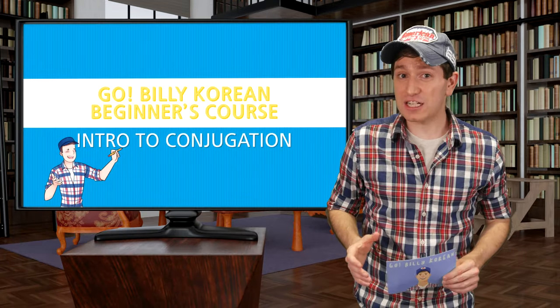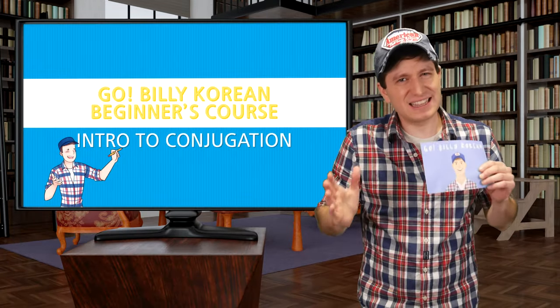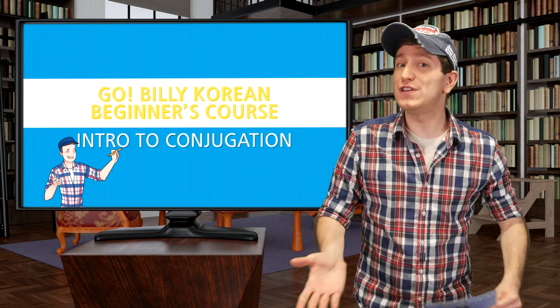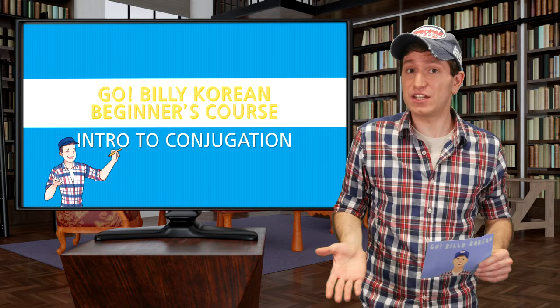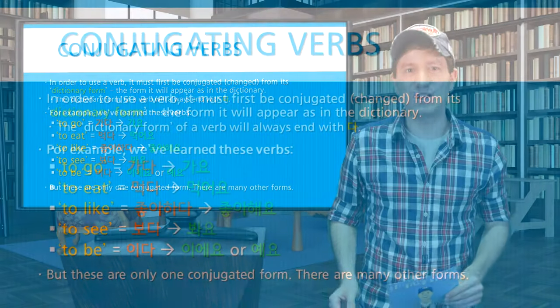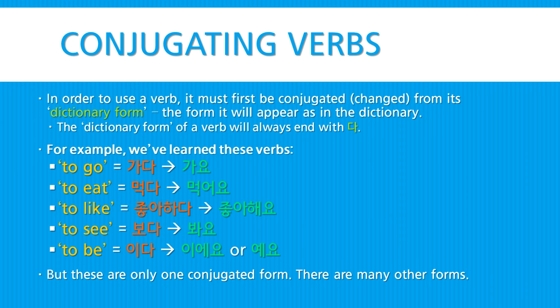Welcome back. We have talked before a little bit about conjugating verbs, but I've only told you a few conjugations. We haven't yet gone over how to conjugate verbs, so that's what today's lesson is going to be. In order to use any verb in Korean, it must first be conjugated or changed from its dictionary form — the form that you would see in the dictionary. This dictionary form will always end with 다.